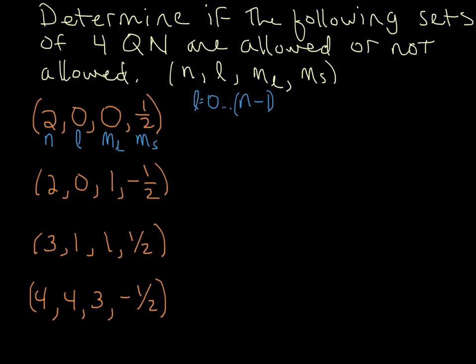Now what about m sub l? So remember for m sub l, the little shorthand that we've been using is it can go from negative l to positive l. And so l equals zero, so that just means that m sub l can be negative zero and positive zero, which of course is still zero, so that one's okay. And then remember for m sub s, it can either be plus one-half or minus one-half, spin up or spin down, so that one's fine too. So this one is allowed.